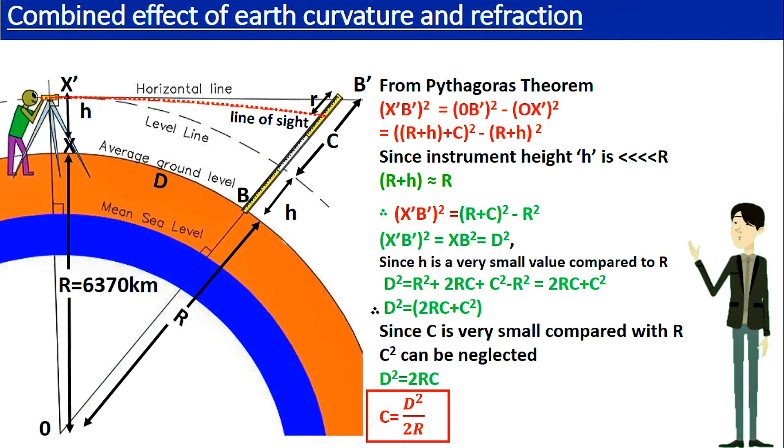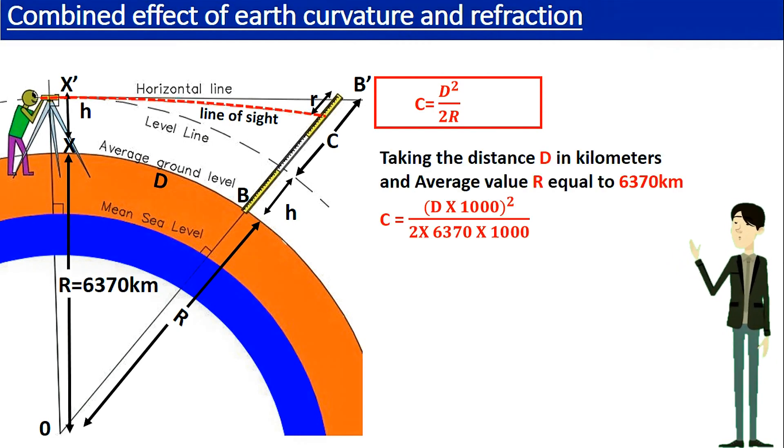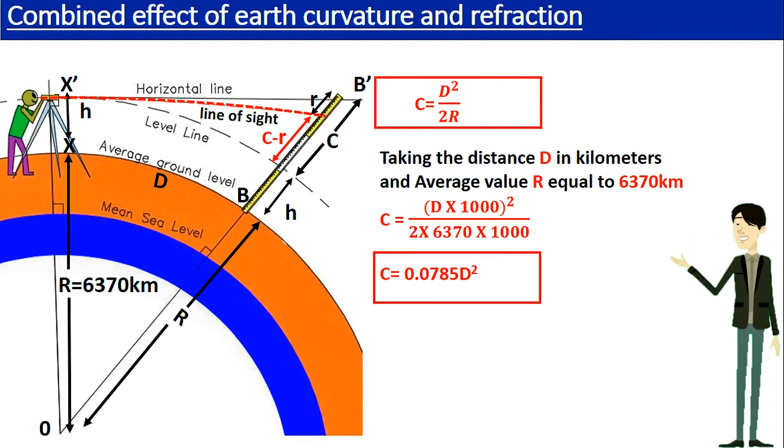Now we can substitute 6370 kilometers for R and convert the value into meters. Then we can substitute the value for D in kilometers and get the answer in meters. The simplified answer for C is 0.0785 D squared. But finding C is not enough because we need to find C minus simple R to get the correct staff reading.